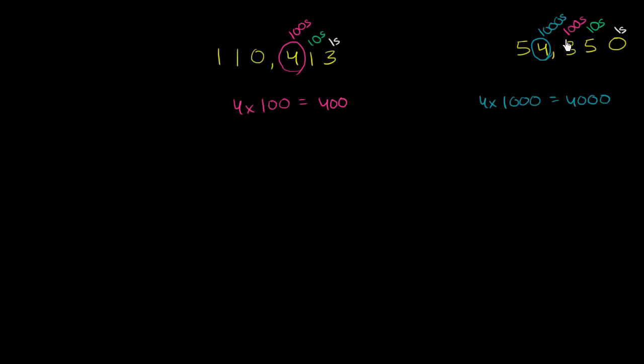each increment represents one tenth as much, assuming we have the same digit. So a four in thousands is 4,000. A four in hundreds would be one tenth as much. A four in the tens would be one tenth as much as that.